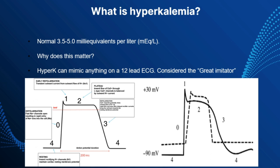An interesting tidbit on why hyperkalemia can cause ST elevation and mimic a STEMI: a potassium current channel located on the myocyte cell membrane is responsible for potassium efflux during phase two and phase three of the cardiac action potential, and it increases potassium efflux when extracellular potassium is elevated. Efflux is just a fancy term for material that is flowing out. This leads to shortening of the phase two and phase three action potential.